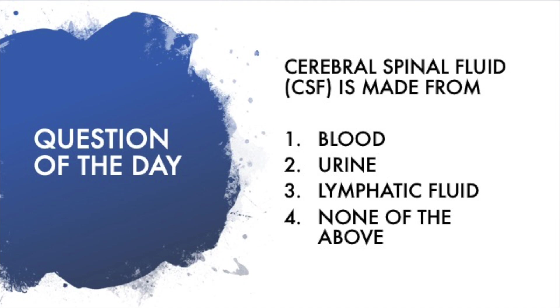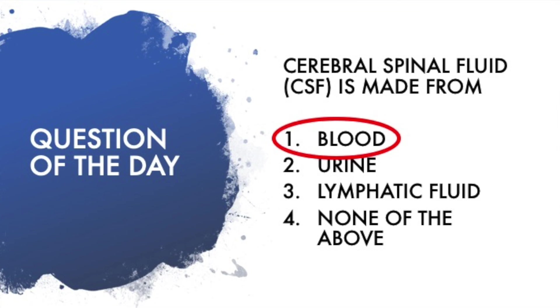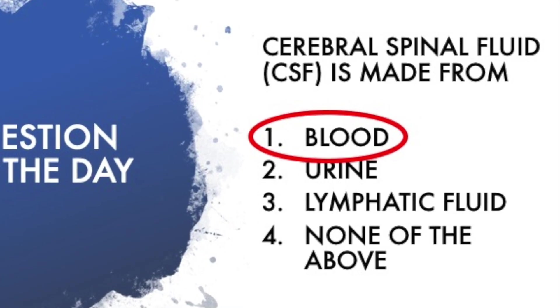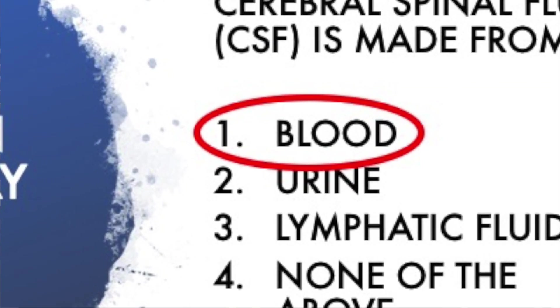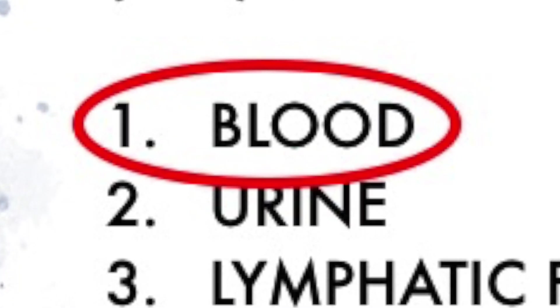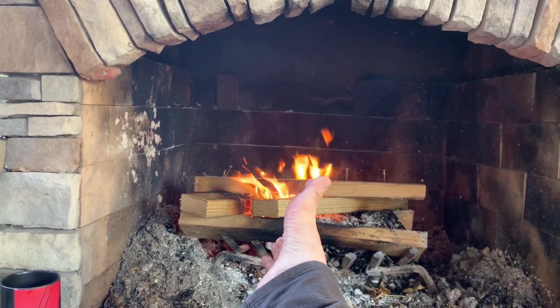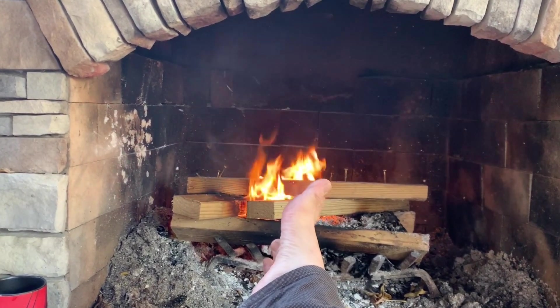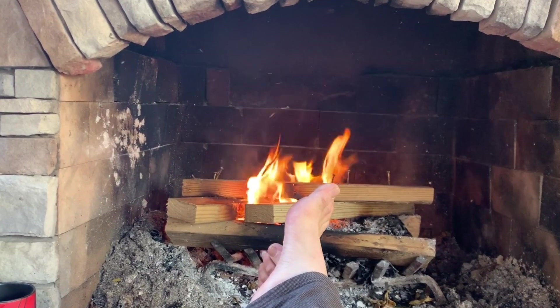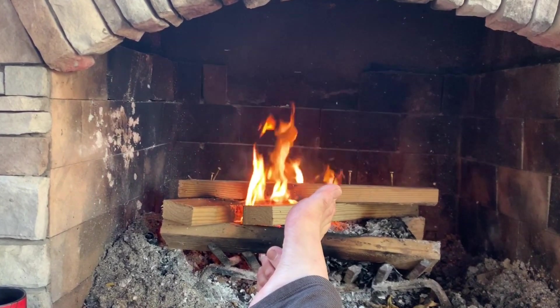And now to answer the question of the day: Cerebral spinal fluid, CSF, is made from? The answer is number one — it's made from the blood. Did you get it right? What questions surrounding the MS diagnosis do you still have? Please leave them in the comments section below, and I'll answer them in a future video or live stream.